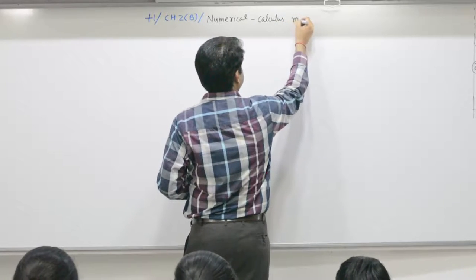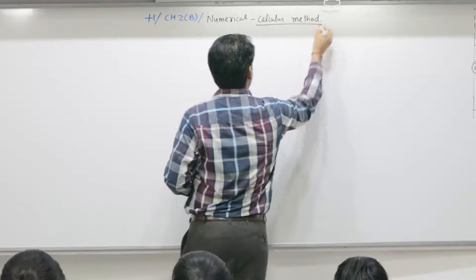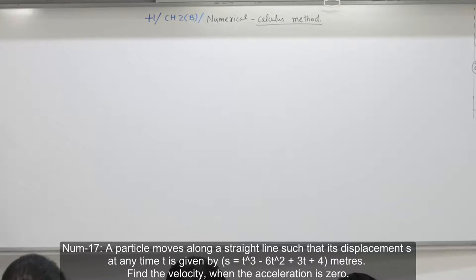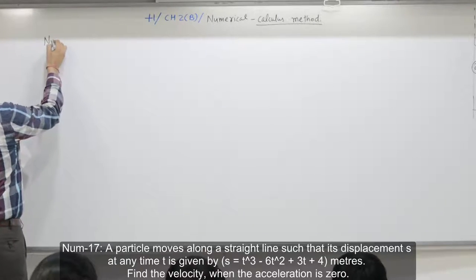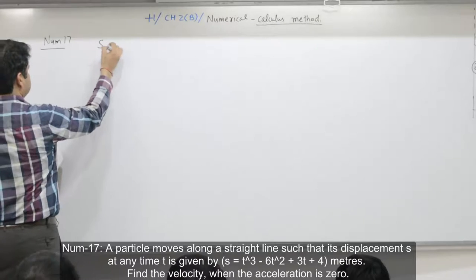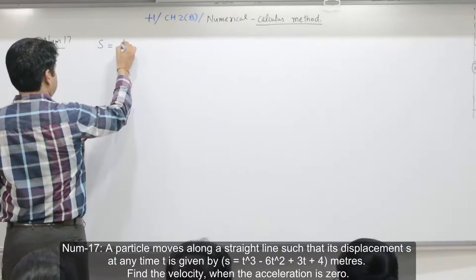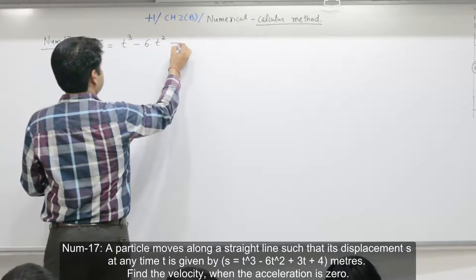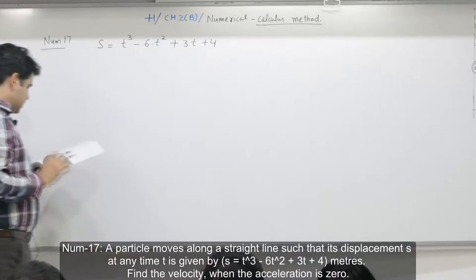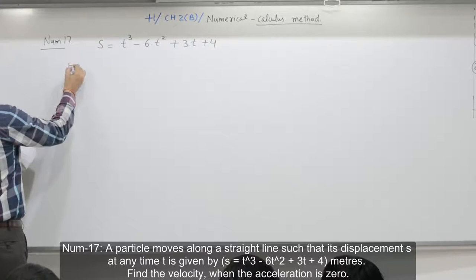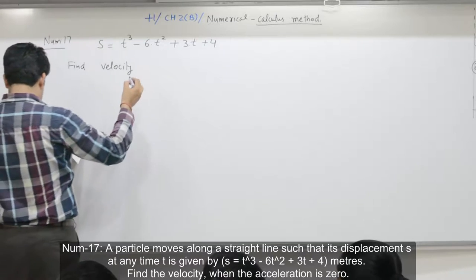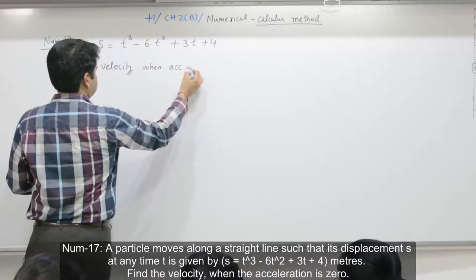Calculus method. Numerical number 17: a particle moves along a straight line such that its displacement is given as s = t³ - 6t² + 3t + 4. Find velocity when acceleration is 0.